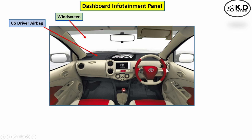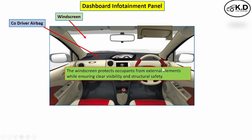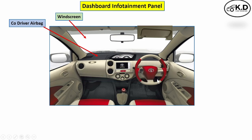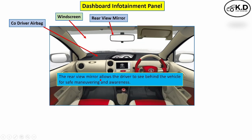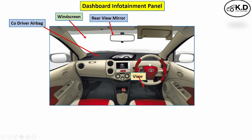The function of the windshield is to protect the occupant from external elements while driving and also give clear visibility. The next part is the rear view mirror, which allows the driver to see the vehicles behind for safe driving.